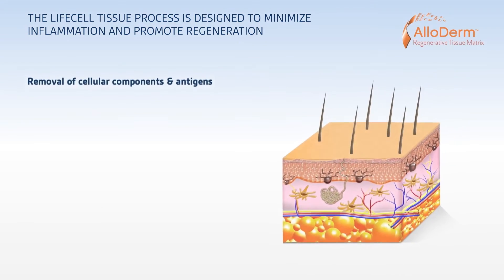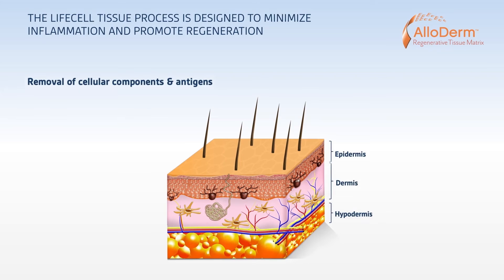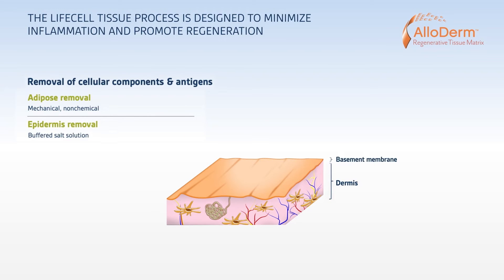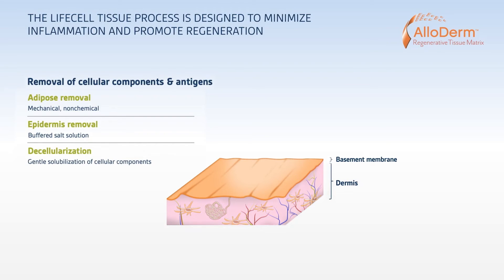Let's take a closer look at the LifeCell tissue process that gives Alloderm its unique properties. First, the adipose layer of the tissue is removed mechanically, without the use of chemicals that could potentially damage the matrix. Next, solution processing begins. Because the epidermis is extremely cellular and antigenic, most of it is removed from the dermal tissue through a buffered salt solution wash. This gentle process does not remove the basement membrane. Any cellular components that remain in the dermal layer after the epidermis is removed are then also removed during a subsequent gentle solubilization step.